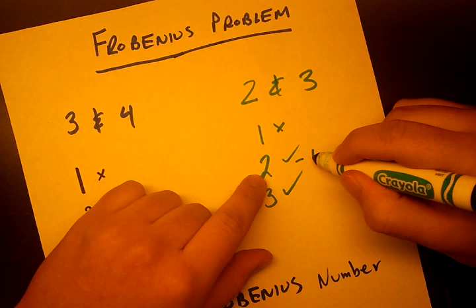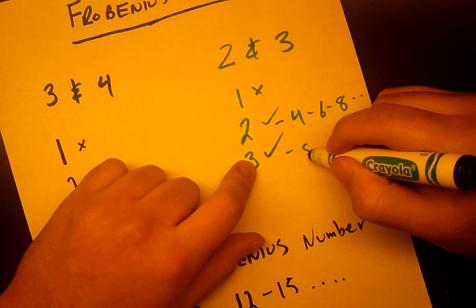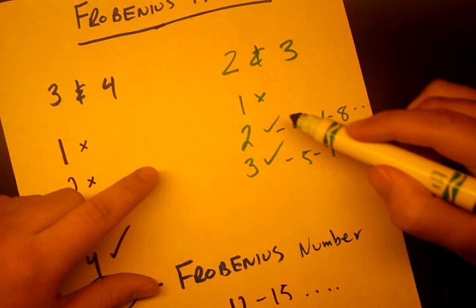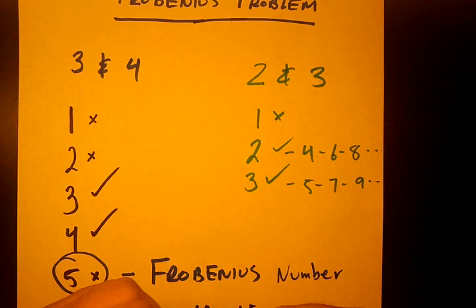Because take 2, and take 3, and if we add 2 to this we get 4, 6, 8, and so on. If we take 3 and add 2 we get 5, 7, 9, and so on. And in this way we form every single number after 1. So 1 is actually the Frobenius number of 2 and 3.